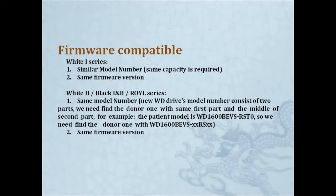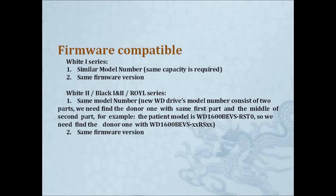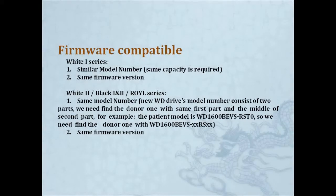If we're going to find a donor firmware for the Silver 1 series, you need to find a similar model number with the same capacity and the same firmware version — the firmware version is important. For Silver 2, Black 1, Black 2, and RYL, you need to find the same model number and the same firmware version. So basically: same model and same firmware version.